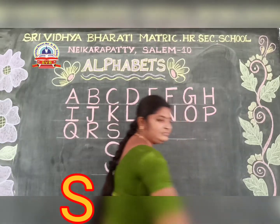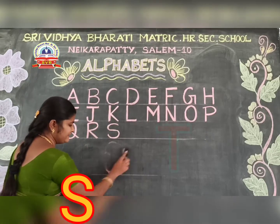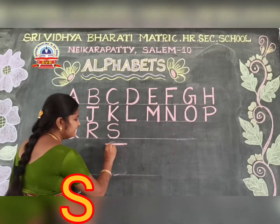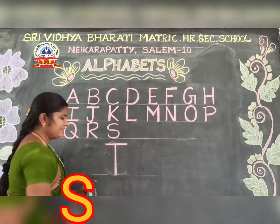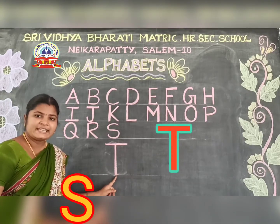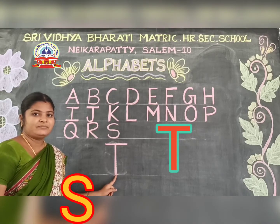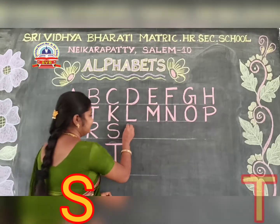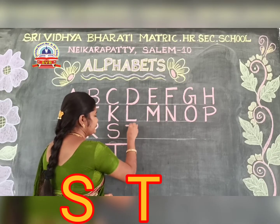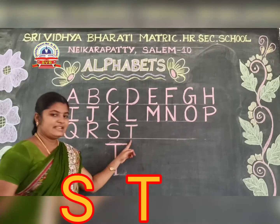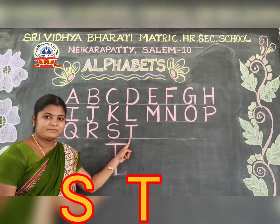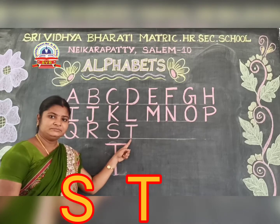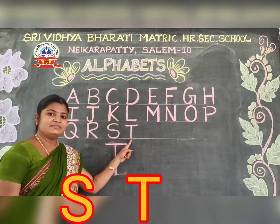Next comes T. T. See here. This is T. T. Can we say it loudly? T. T. T. Very good. Now let us write in the series. T. T. Say loudly. T. T. T. So you can now repeat me. T. T. T. Very good.